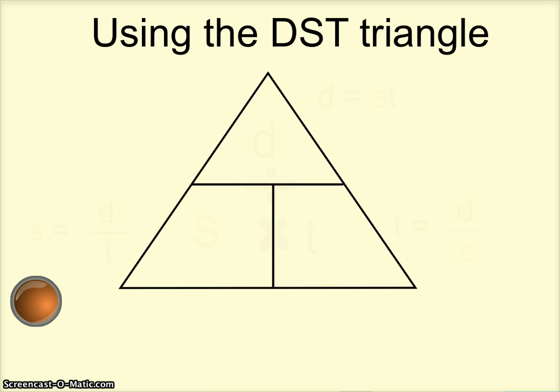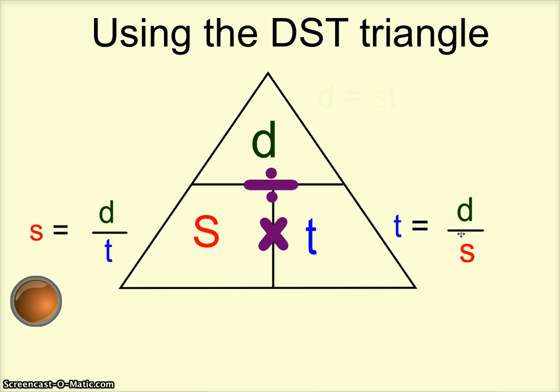We use the DST triangle. Speed is distance over time. When the numbers are one on top of each other, that means divide. Side by side, it means multiply. So speed equals distance over time, time equals distance over speed, and distance equals speed times time.